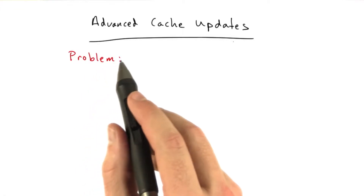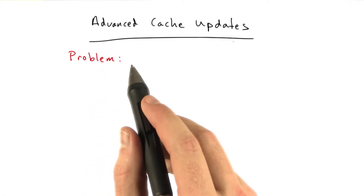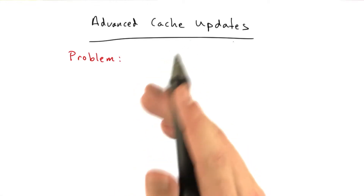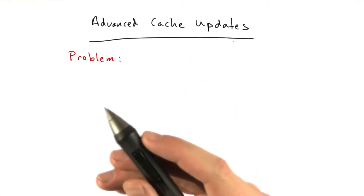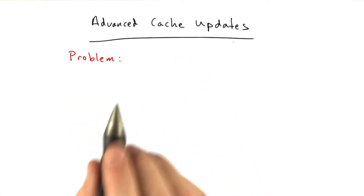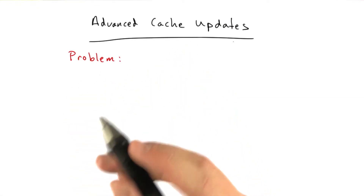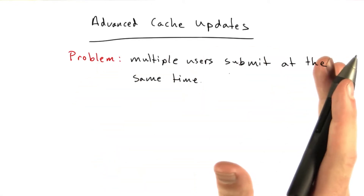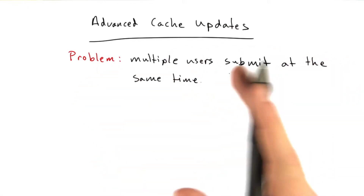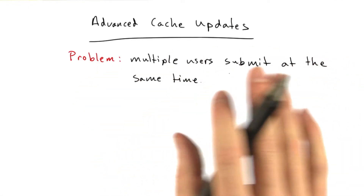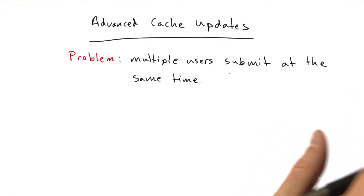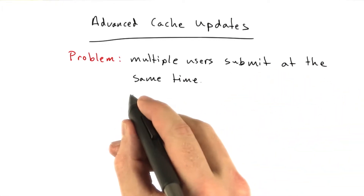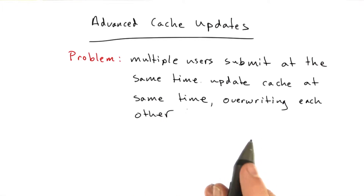I'd like to talk about some advanced cache updates. Say we have this problem where multiple people submit posts to ASCII Chan at the same time, or submit to your blog at the exact same time. Let's say they hit multiple app servers or different app servers. They both write to the database at the same time, and then they both update the cache at the same time, overwriting each other. This can happen.